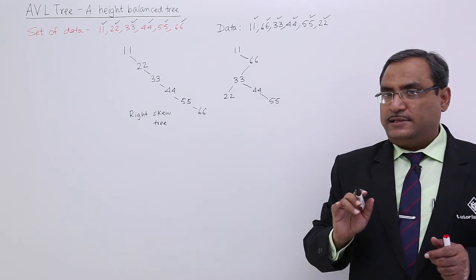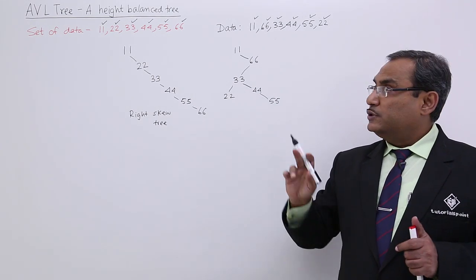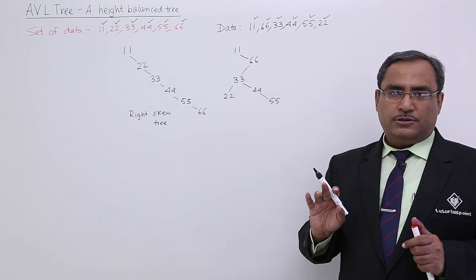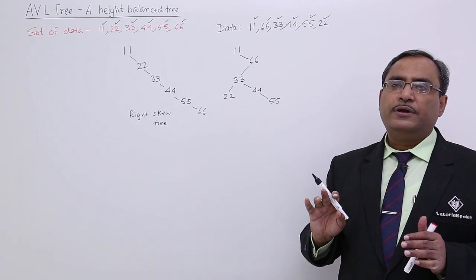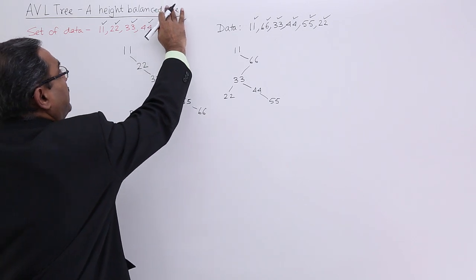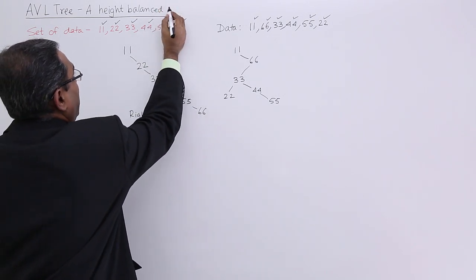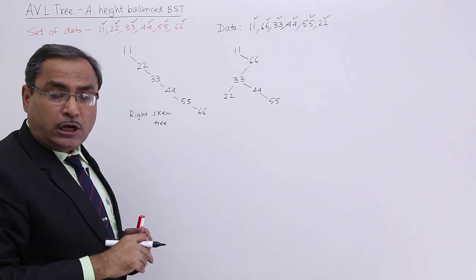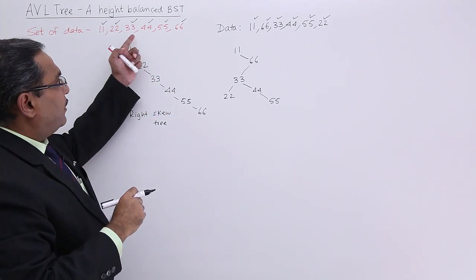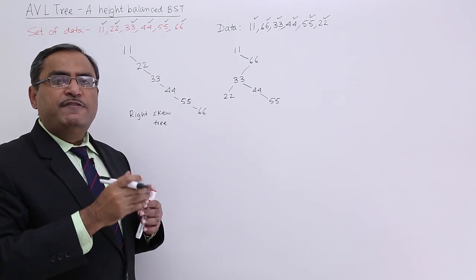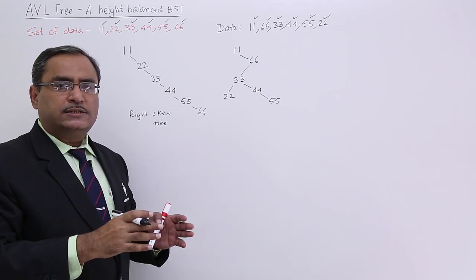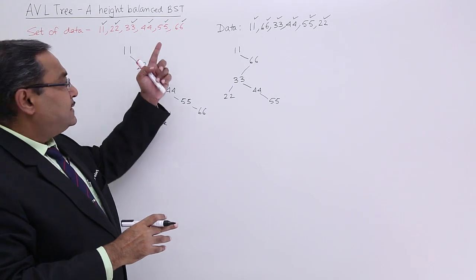The AVL tree name comes from three scientists' names. This AVL tree is a height balanced binary search tree — height balanced BST is known as the AVL tree. AVL tree will try to form a binary search tree with the minimum depth for the given set of data.